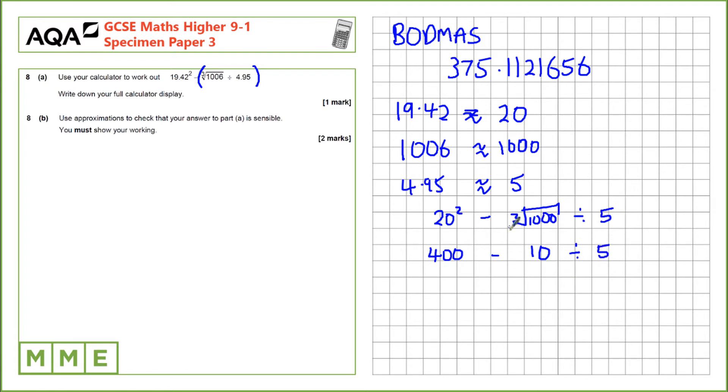Again, using BODMAS, division comes first. So we have 400 subtract 10 divided by 5, which is 2. That's 398.